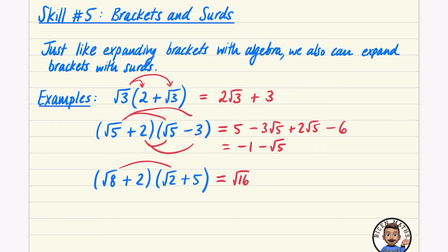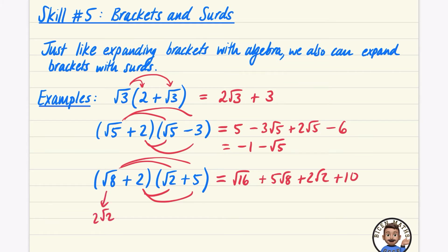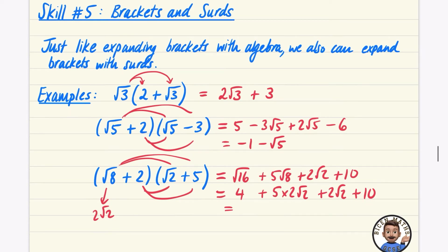Going straight in with multiplying: root eight times root two is root sixteen; root eight times five is plus five root eight; two times root two gives another term; and two times five is ten. There will definitely be some simplifying needed. Root sixteen is four, and root eight is two root two, so five root eight is five multiplied by two root two — that's ten root two. Then ten root two plus two root two is twelve root two, and four plus ten is fourteen.